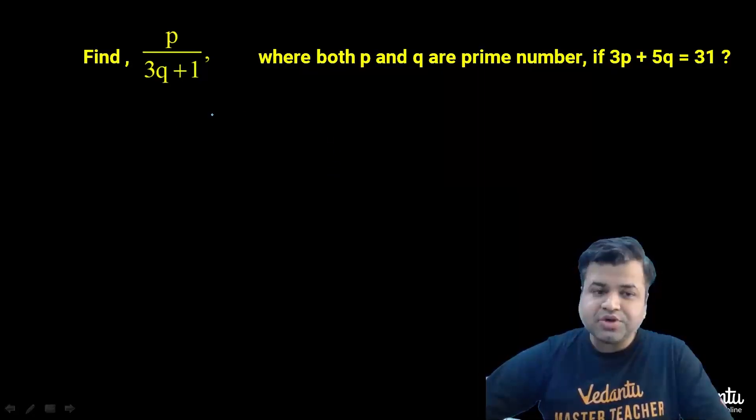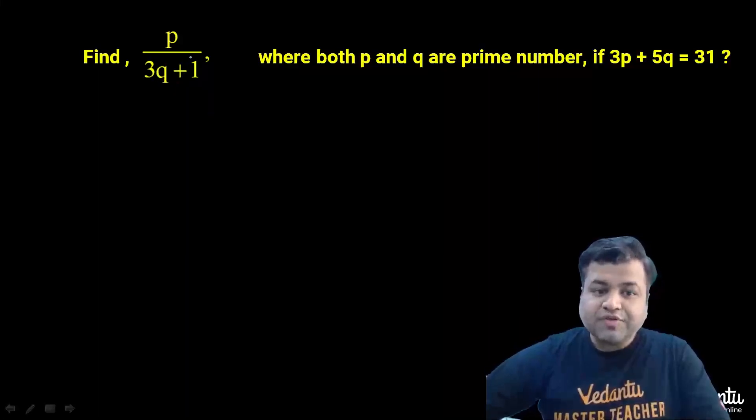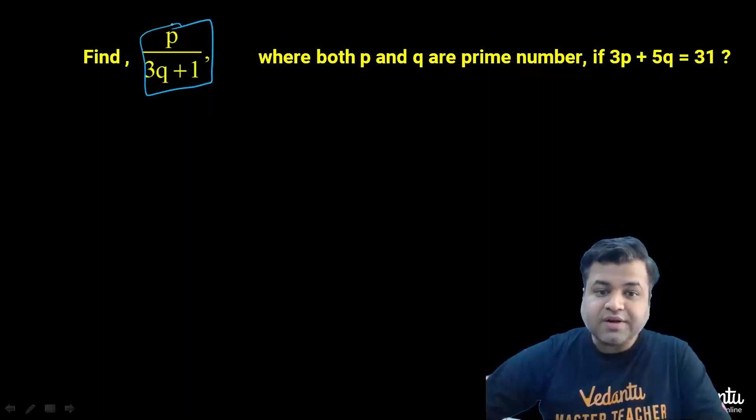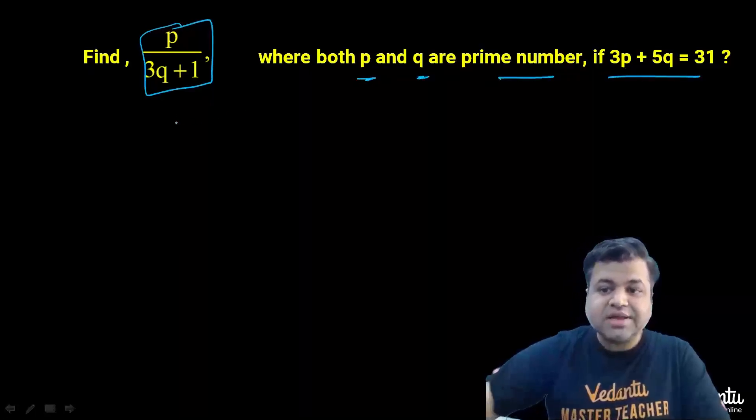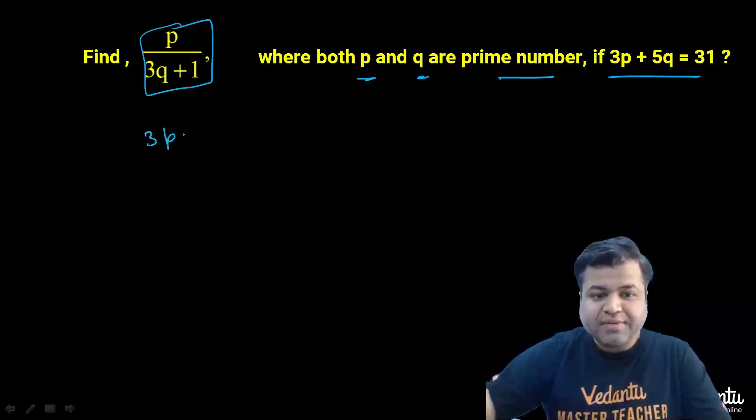So as you can see, this question is of number theory. The question states that we need to find the value of P upon 3Q plus 1, where both P and Q are prime numbers, and we have a condition: 3P plus 5Q equals 31.